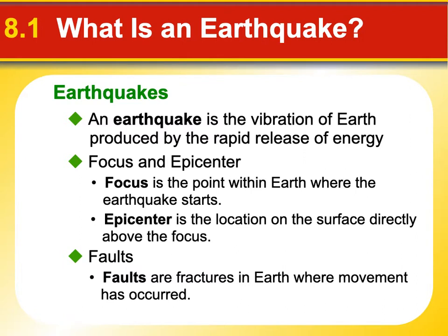Two key terms: the focus and the epicenter. The focus is the point inside the earth where the earthquake actually starts — it could be very deep underground or shallower depending on the type of earthquake. The epicenter is the point right on the surface above the focus. When seismographs help us locate the epicenter, that's the place on the surface above where the quake occurred. The greatest shaking almost always happens right at the epicenter. The word fault refers to any crack where the earth has actually moved — where the slippage happened and the energy was released.